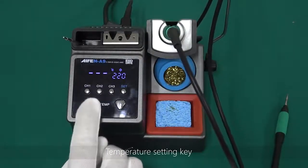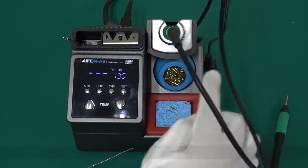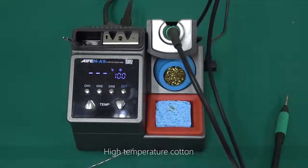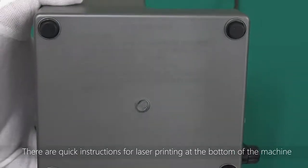Temperature setting T. Aluminum handle bracket. Hub. Copper wire cleaner. High temperature cotton. There are quick instructions for laser printing at the bottom of the machine.